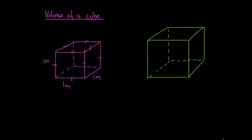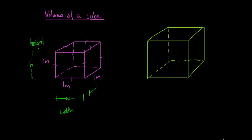We can see here that this face is 1 meter, this face is 1 meter, and this face is 1 meter. Because it's a cube, we know that all of the faces must have the exact same dimensions, so all sides must be 1 meter in length. When we have a three-dimensional shape we usually say that we have a height — this distance here, denoted as h. We have a width — this distance here, sometimes denoted as w. And we have a depth — this distance here, denoted as d for depth; you might also hear it called length.